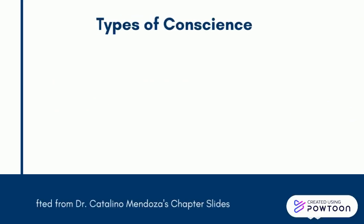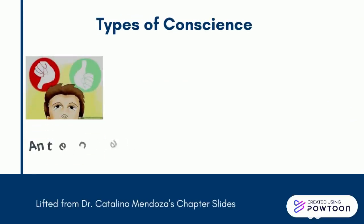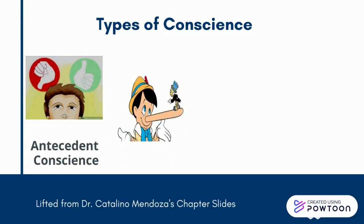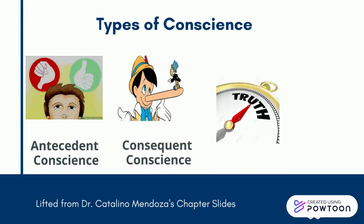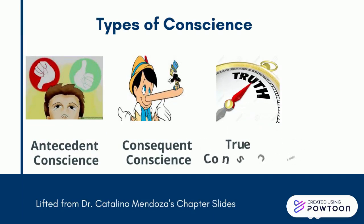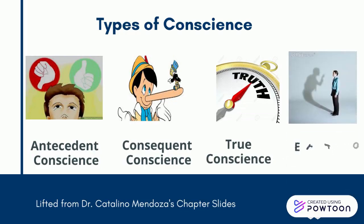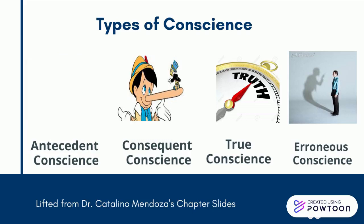Now that we learned about conscience and morality, let's talk about the different types of conscience. An antecedent conscience is when you think and evaluate before you act, which is the opposite of the consequent conscience where the judgment comes after the act. Being objective and telling it as it is is a true conscience, while an erroneous conscience sees judgment in a distorted manner that is either invincible or inculpable — that is, you're at fault because you don't know what you don't know, or you're indeed at fault.